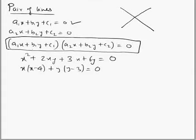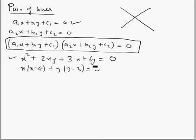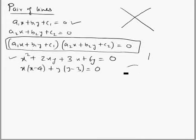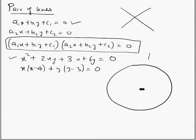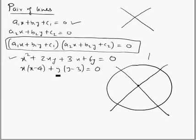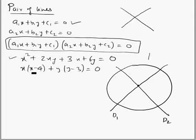Now let's see what this question is. It is mentioned that this equation of pair of lines — the two lines in the pair — are two diameters of the required circle. Diameters are lines that pass through the center of the circle. So this is diameter d1 and this is diameter d2. What we're going to do is factorize this degree-2 equation and get equations of these two lines.